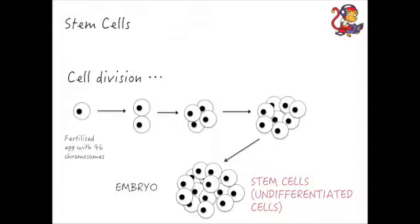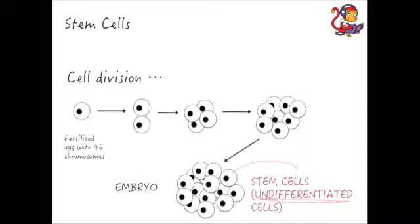We call them undifferentiated cells, and this is important because it means that these cells have the potential to become any type of cell. Undifferentiated here means that they're not specialised. At this stage they're not necessarily a muscle cell or a nerve cell — they can become any particular cell. They've not been switched on yet and told which cell they are going to be. So all of these are stem cells.